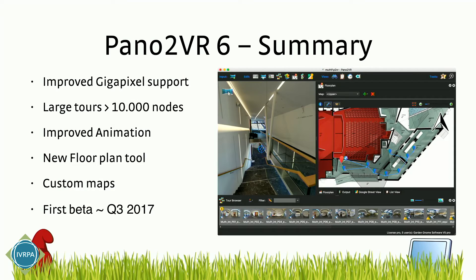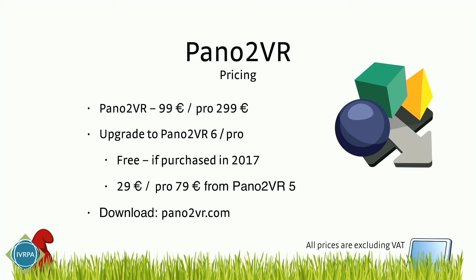So a quick summary of version 6: improved gigapixel support, handling of really large tours, improved animation, new floor plan tool, and maps. It will be available in the third quarter — we still need to fine-tune some things. Regarding pricing: Pano2VR is 99 euros for the standard version and 299 for the pro version. This will stay the same for version 6. If you purchased Pano2VR version 5 in 2017, the upgrade to version 6 will be free. Otherwise it's 29 euros. Here's the download link. Thank you.